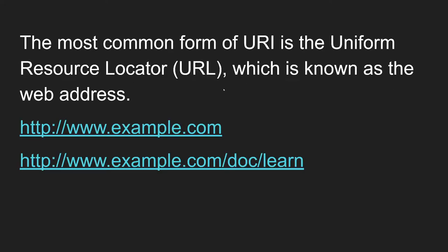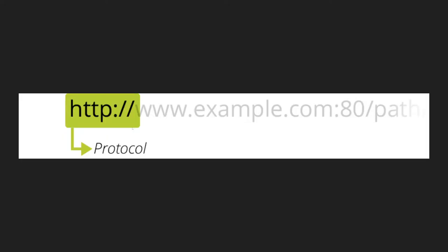The most common form of a URI is the Uniform Resource Locator — we call it a URL, which is known as the web address. A URL is a unique identifier given to a document, file, or anything whenever you try to access it. That identifier name is nothing but a Uniform Resource Identifier.